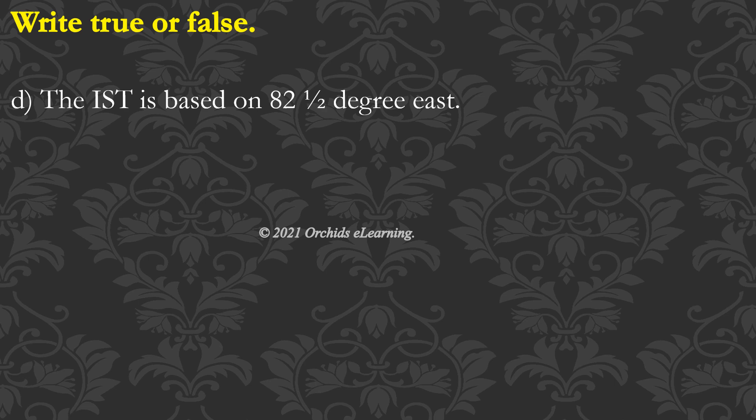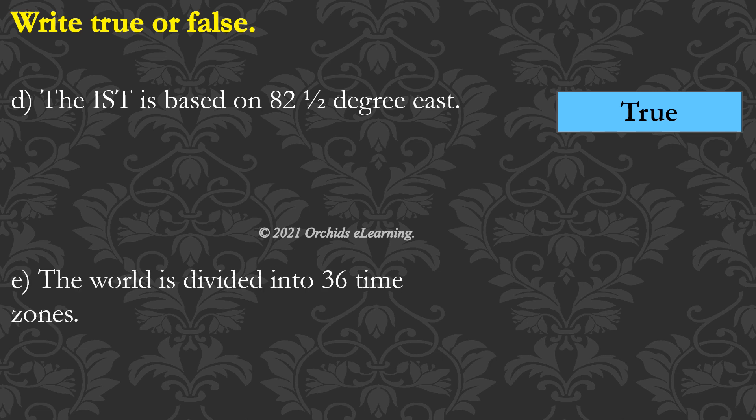The IST is based on 82.5 degrees east. True. The world is divided into 36 time zones. False.